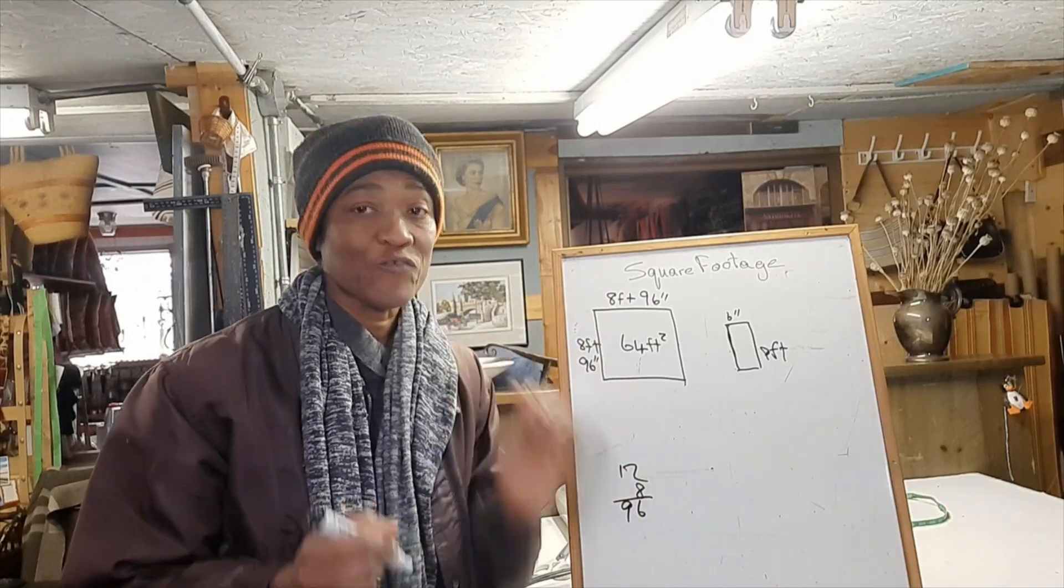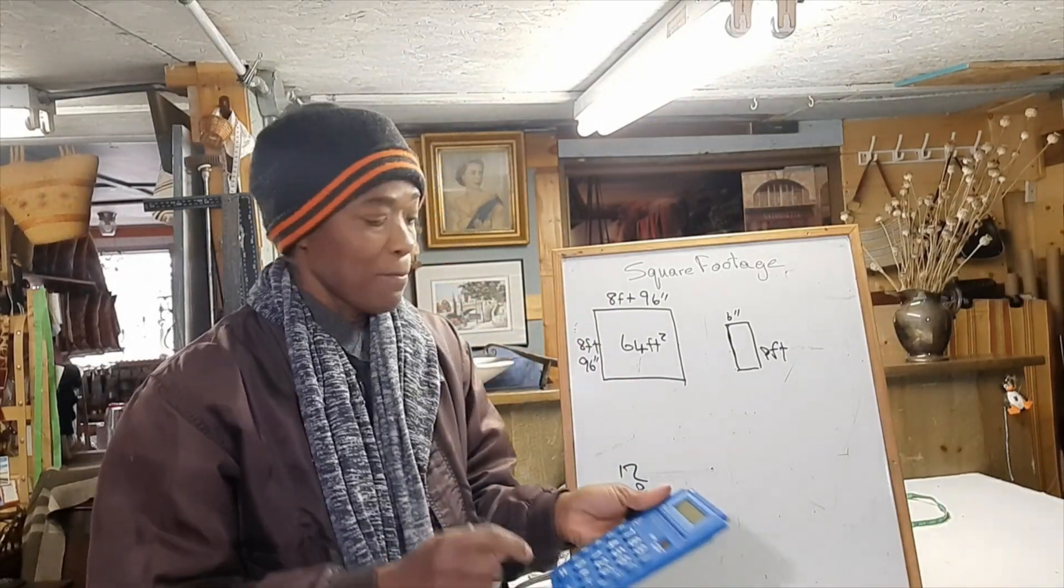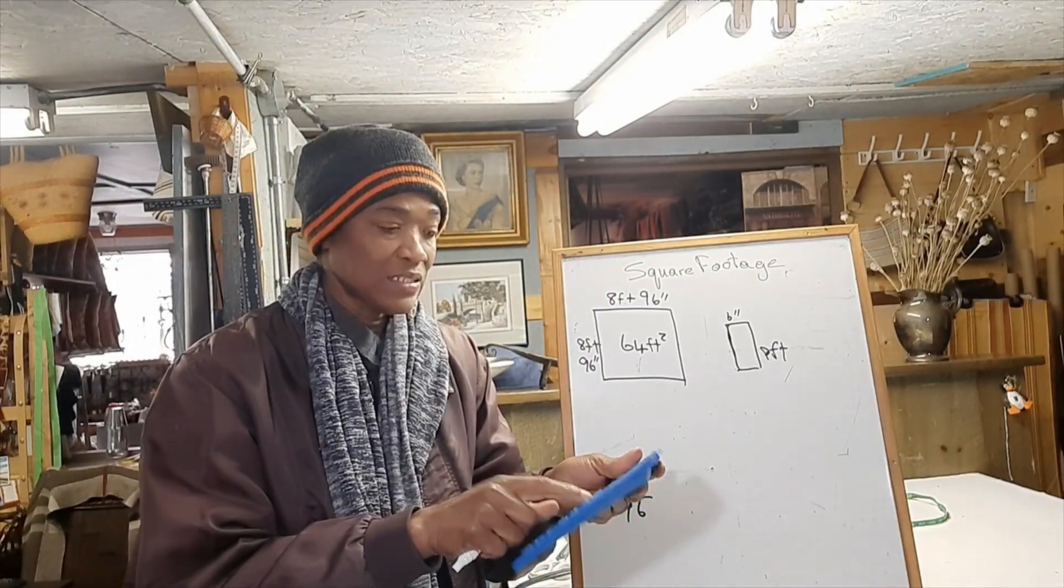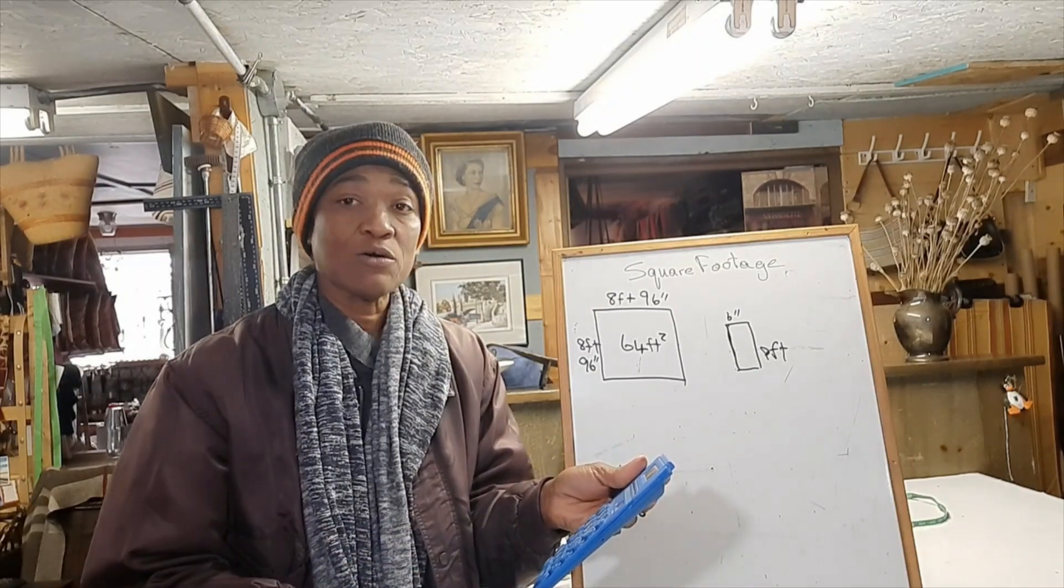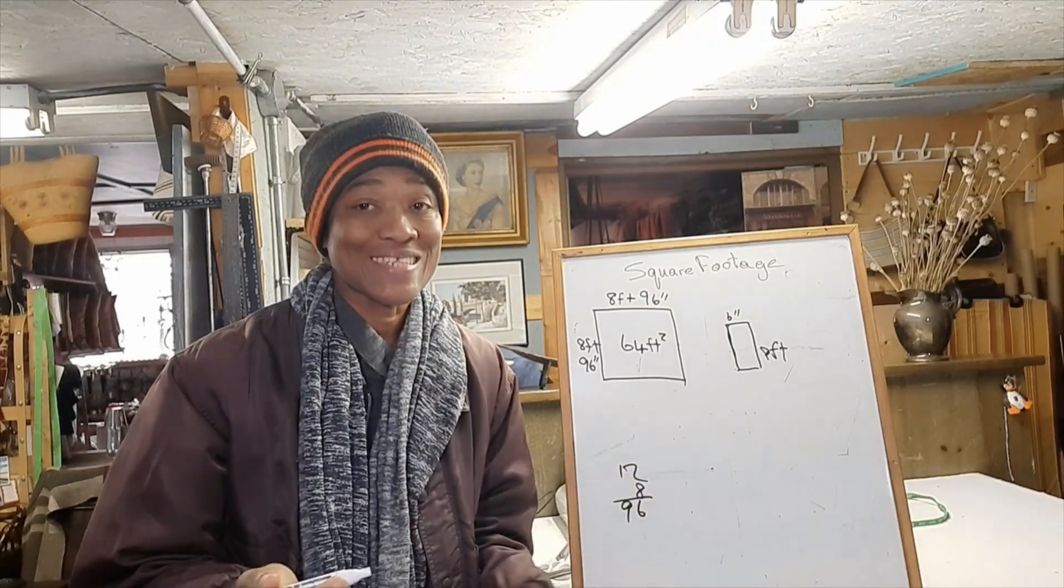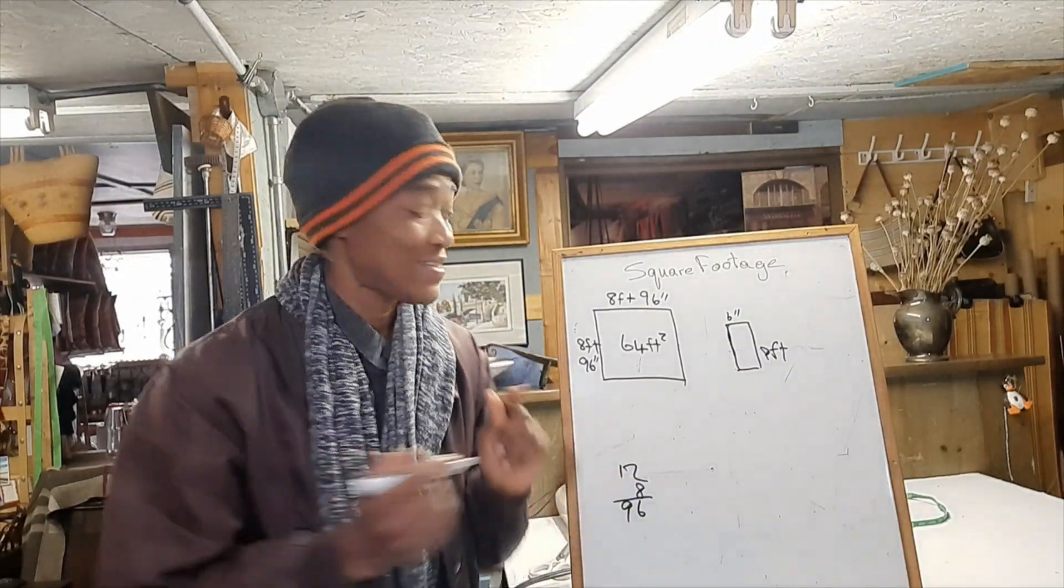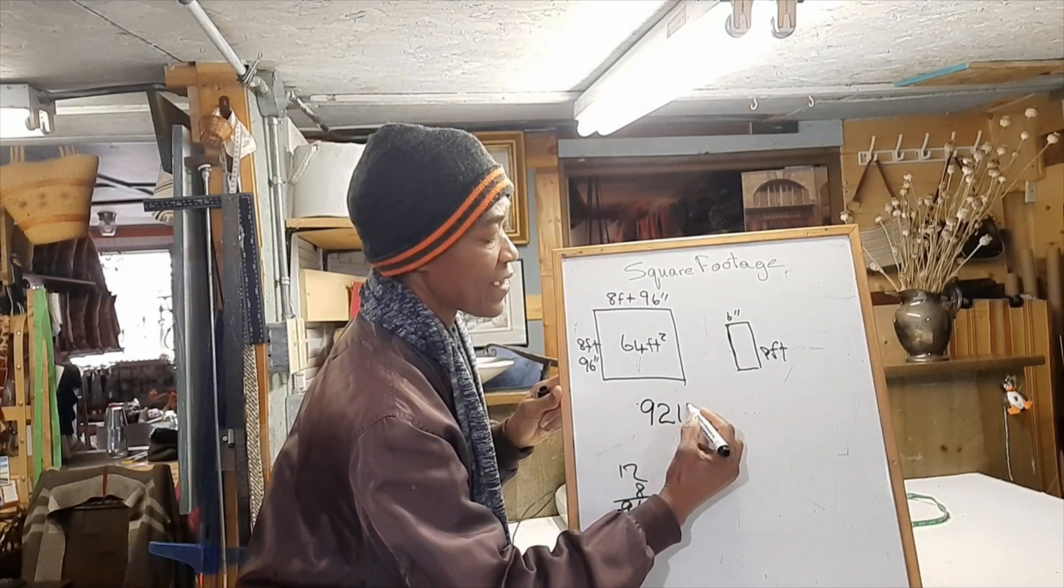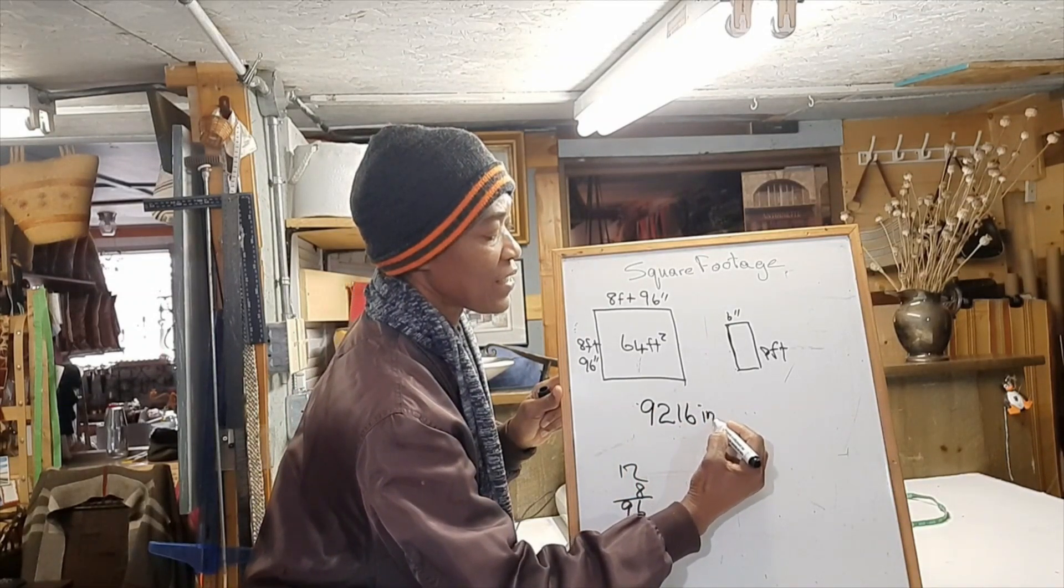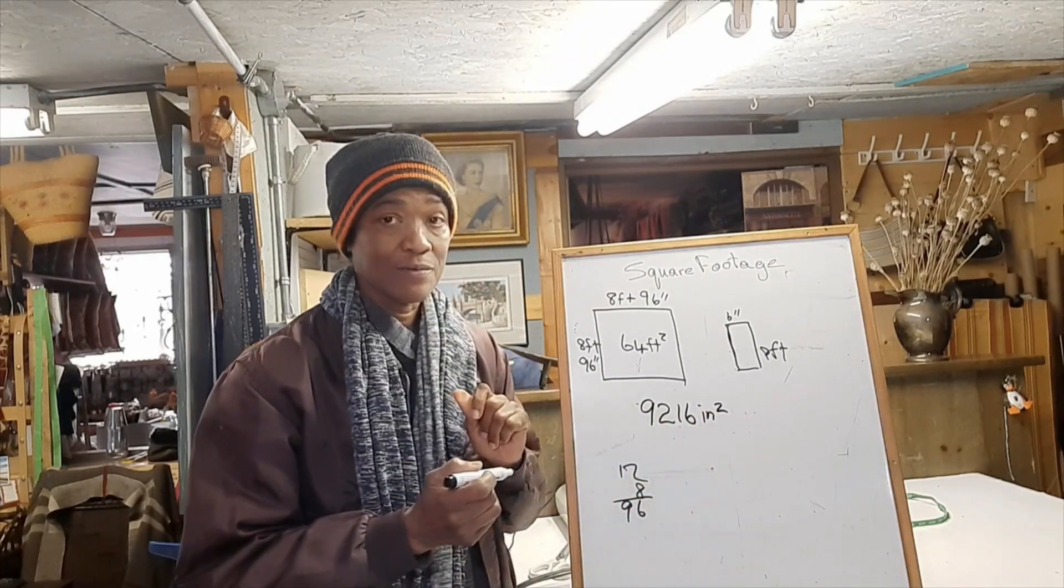Now, in order to get the square feet, we multiply 96 by 96, and that's 9,216 square inches. That's 9,216 inches squared.